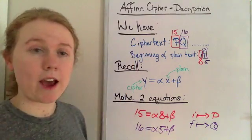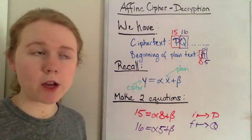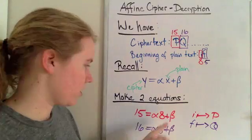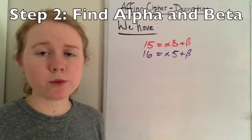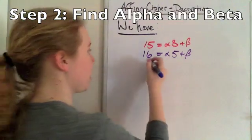So now we have two variables, alpha and beta, and we have two equations, so therefore we can solve for alpha and beta. There are multiple ways to solve these, but probably the easiest way is by subtraction.